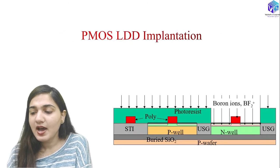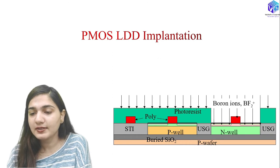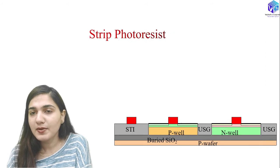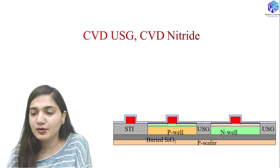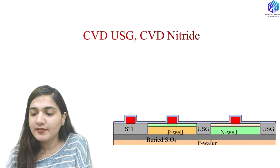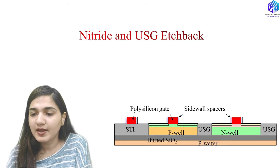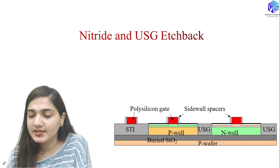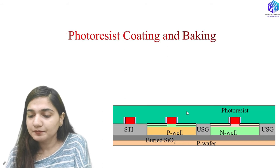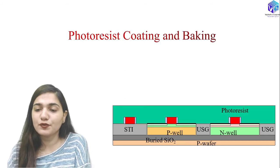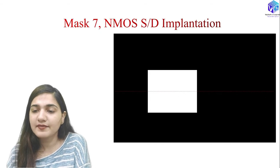For PMOS LDD, boron ions via BF2 ions are implanted after alignment, exposure, PEB development, and inspection. After stripping the photoresist, undoped silicate glass and then nitride are deposited. Using an HDP-CVD process, the nitride and USG are etched back to form sidewall spacers on the gate structure.